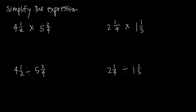We'll start with 4 and 1 half and change it to an improper fraction. Remember that an improper fraction is a fraction where the numerator is greater than or equal to the denominator. To change the mixed number, we take the denominator, which is 2, and multiply it by the whole number: 2 times 4 gives us 8. Then we add the numerator: 8 plus 1 is 9. We put 9 over the original denominator, so 4 and 1 half becomes 9 halves.